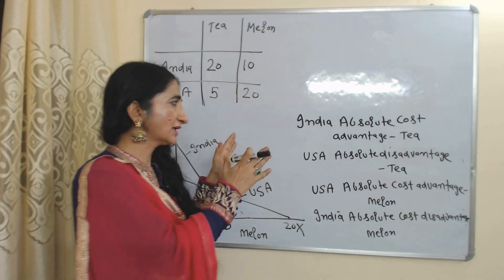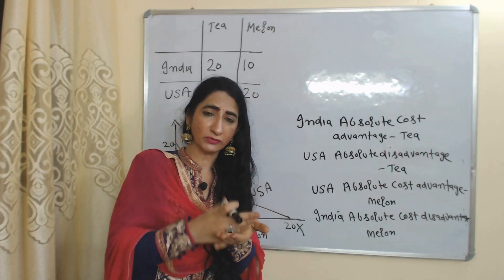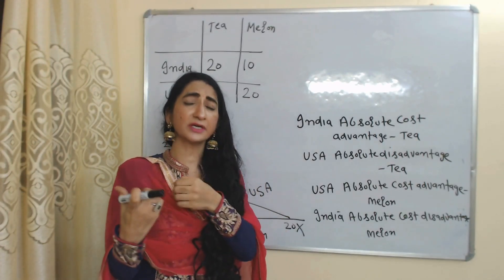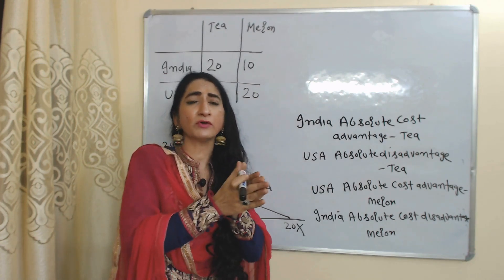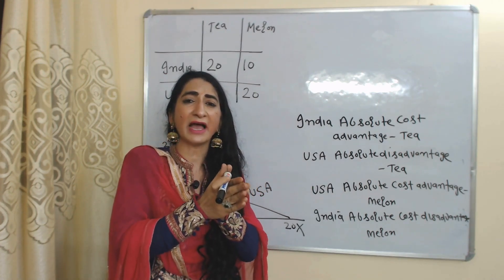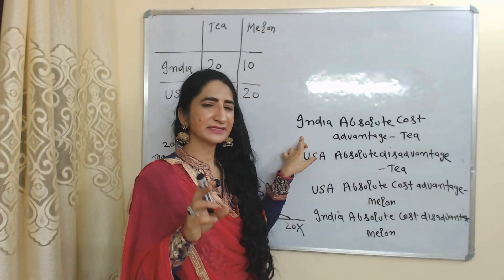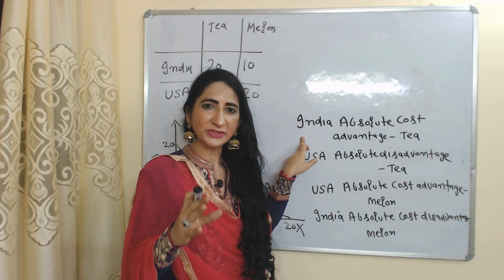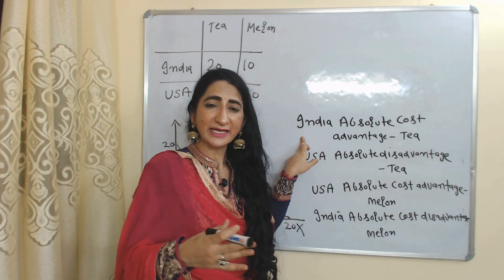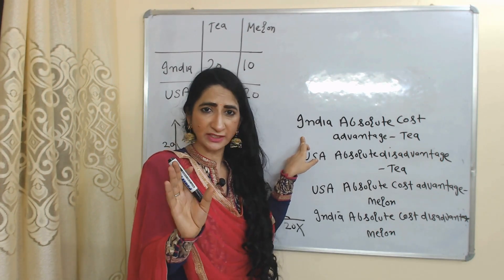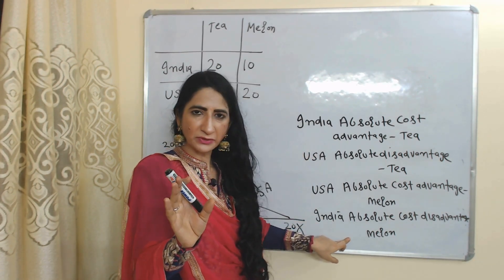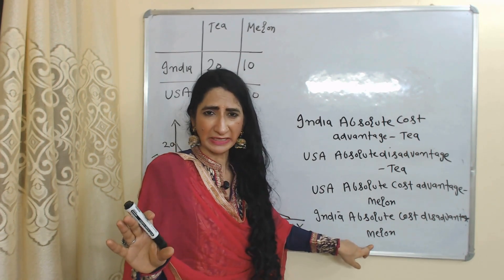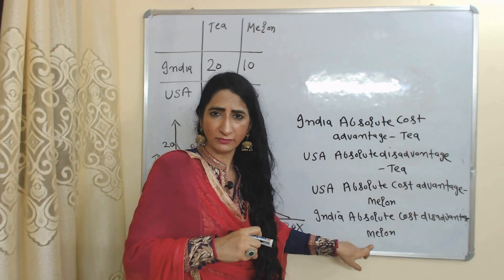According to this theory, countries should increase production and export of those goods in which they have absolute cost advantage and should reduce production and increase import of those goods in which they have absolute disadvantage. So India has absolute cost advantage in production of tea, that's why India should increase the production of tea to increase export of tea to USA. But since India has absolute disadvantage in melon, India should reduce or stop production of melon and start importing melon from USA.